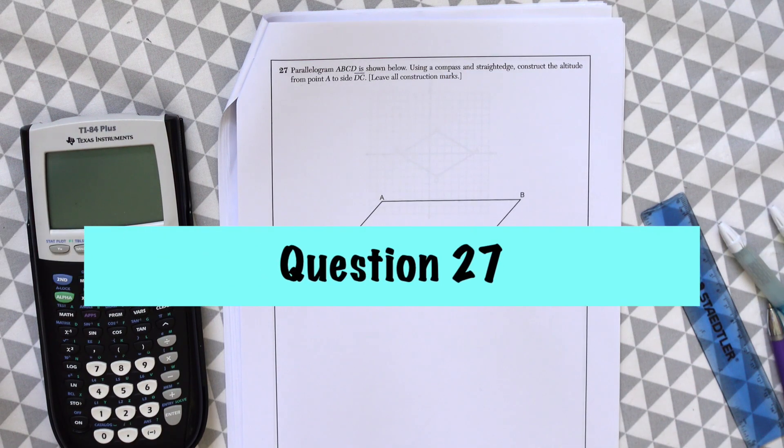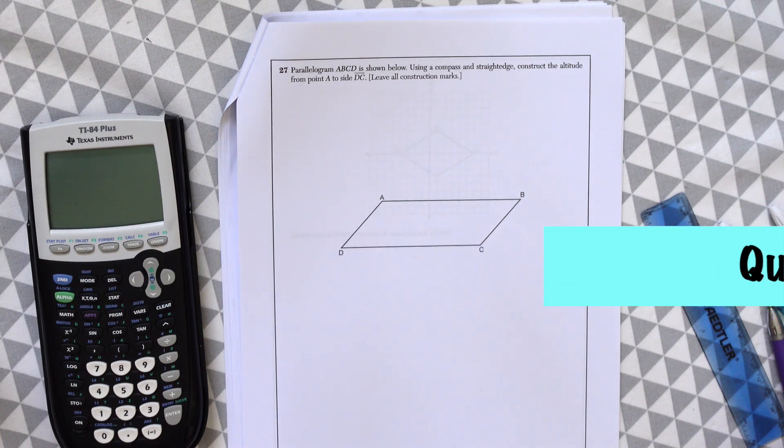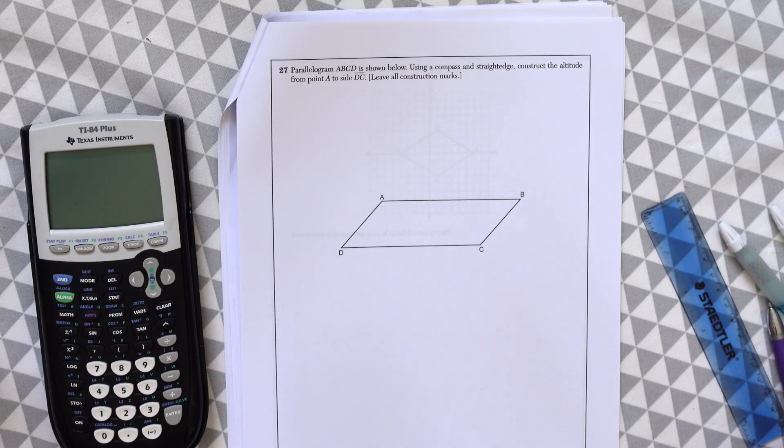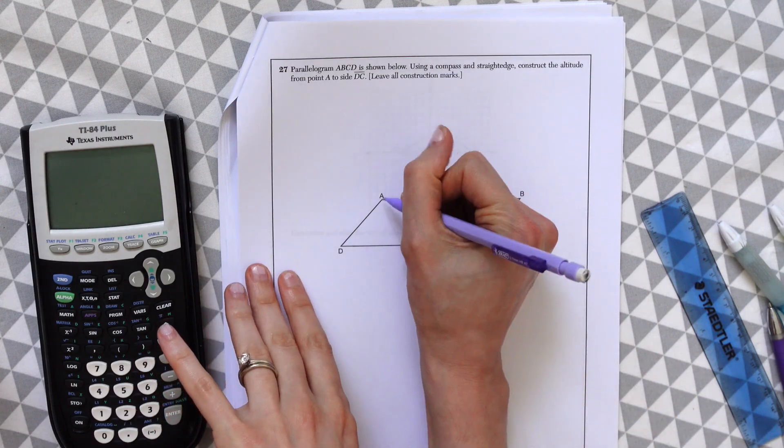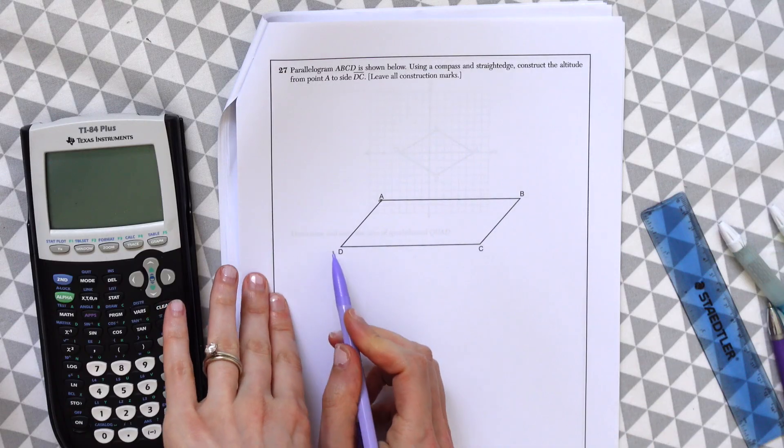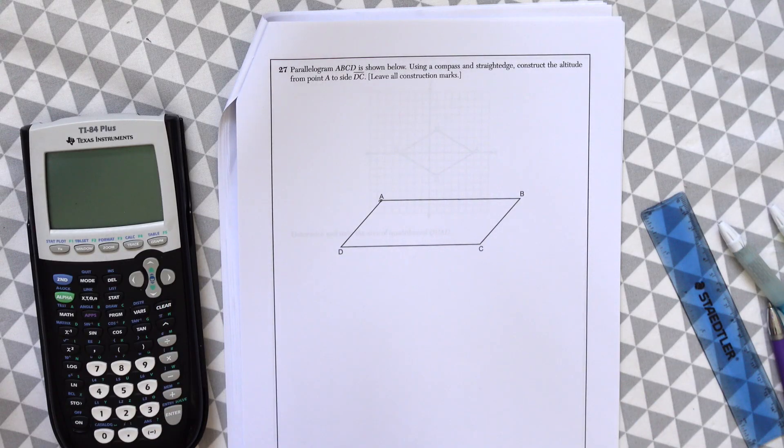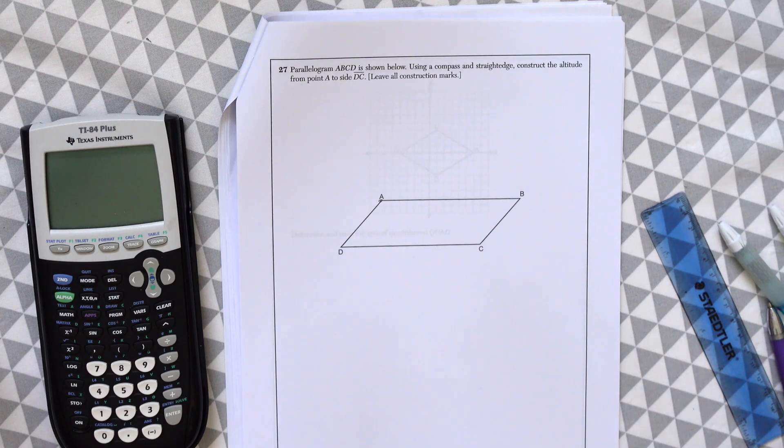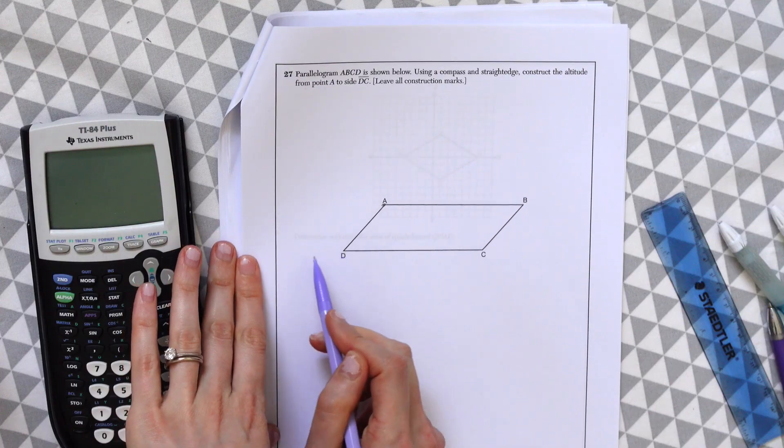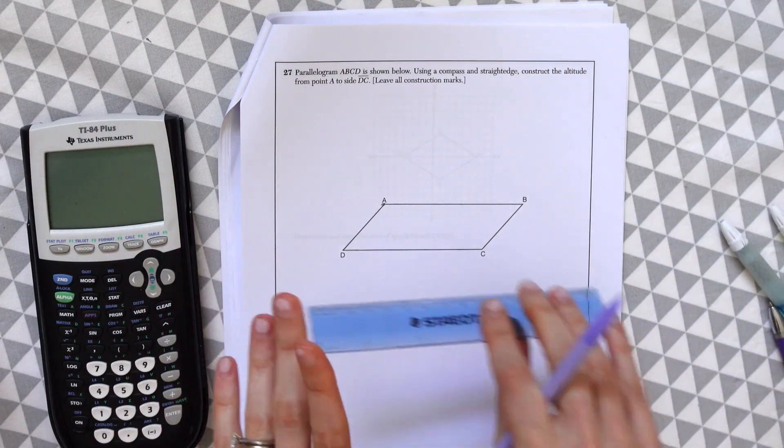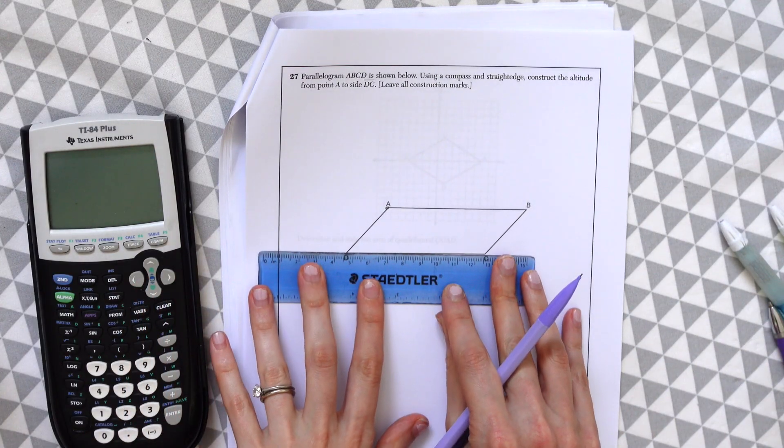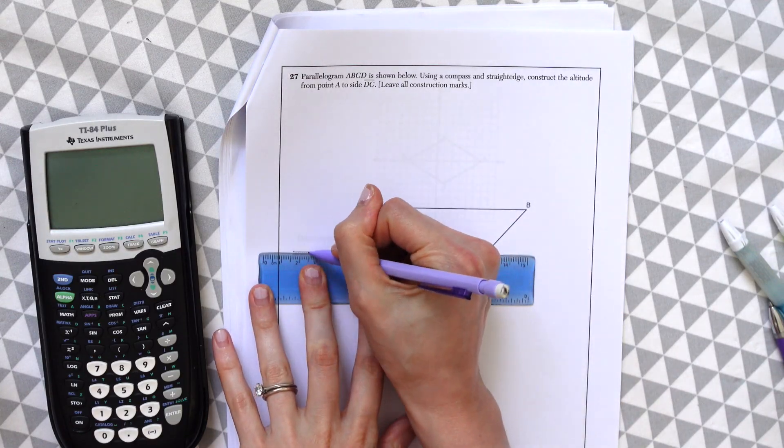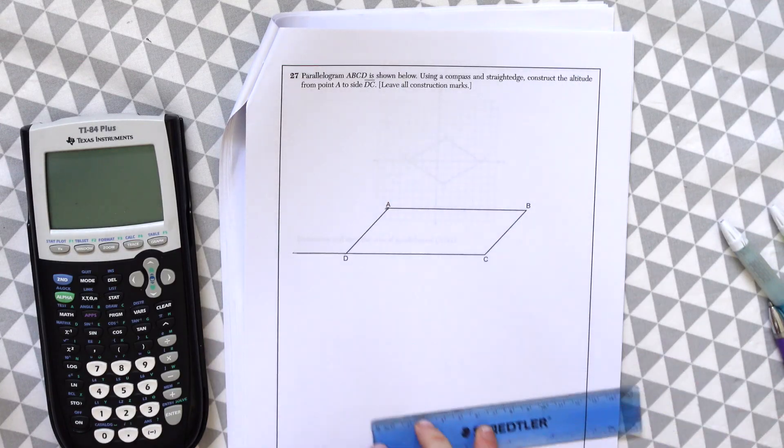Question 27. Parallelogram ABCD is shown below. Using a compass and straightedge, construct the altitude from point A to side DC. Leave all construction marks. So the first thing we're going to want to do here is to extend this line here from D. So I'm just going to use a ruler and extend it out.